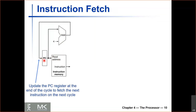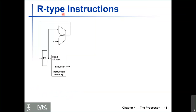This is the part of our data path related to instruction fetch. I have a PC with a memory address to my instruction. I use it to read an instruction from the instruction memory, and I also increment it by four every cycle so I can move on to the next instruction. Now we know how to fetch instructions. The next step is to actually execute them, and we'll go through the different kinds of instructions and see what we need to add to the data path for each.